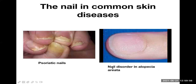Trachyonychia is a fine roughness and white discoloration of the nail plate, seen in alopecia areata. Looking at the picture of a psoriatic nail, the nail is very white and overall unhealthy. In alopecia areata nail disorder, ridges are present and the nail does not look healthy.